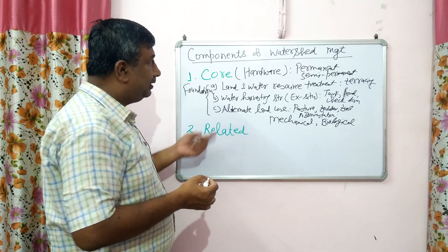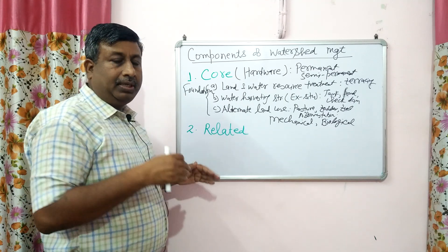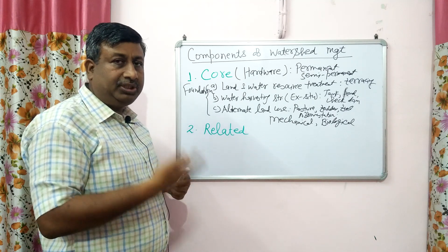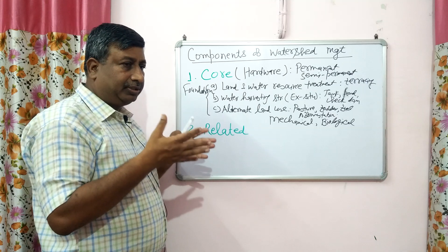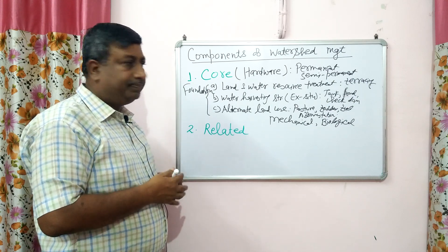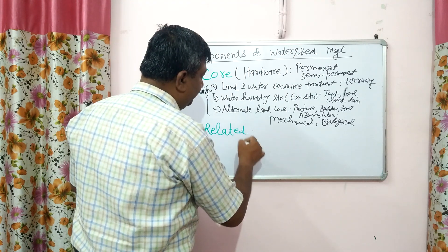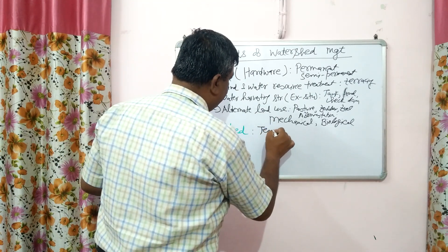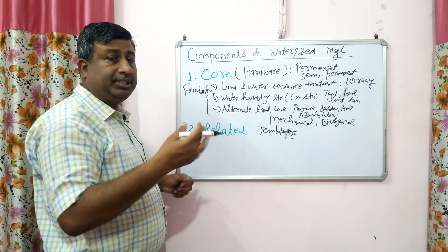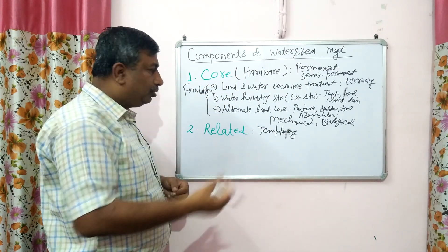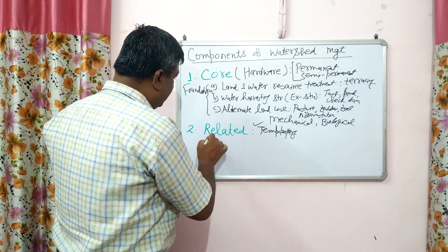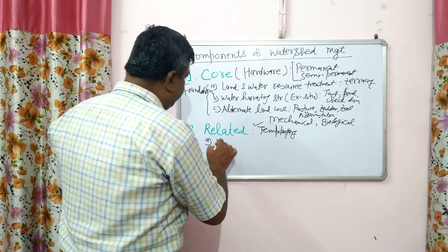In the case of the related component, these activities are not permanent or semi-permanent. These practices are generally confined to one or two crop seasons. The objective is utilization of stored soil moisture, to increase crop productivity and income. These related activities are temporary in nature and have no lasting effects — the effect is for one season or two seasons.